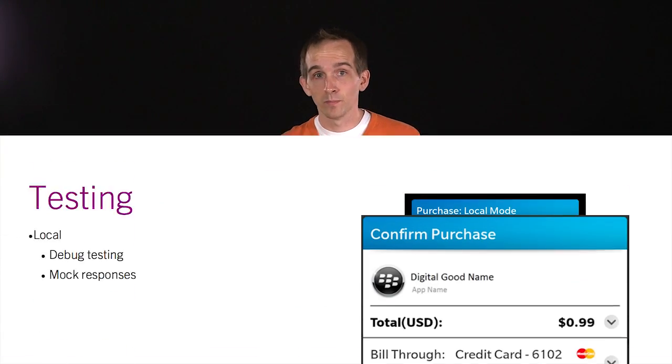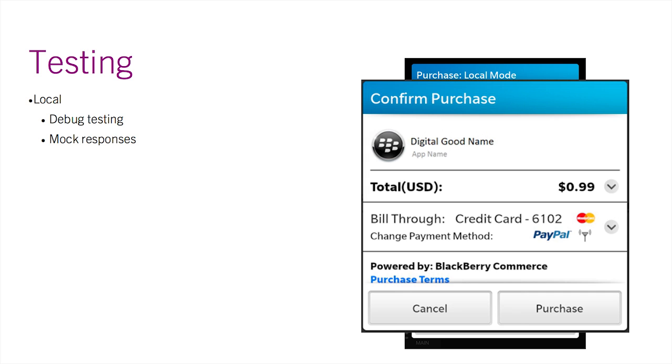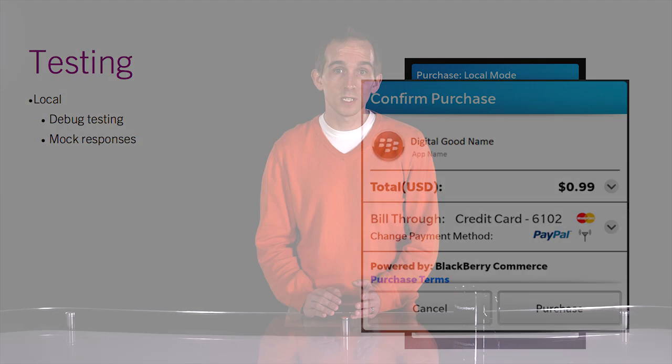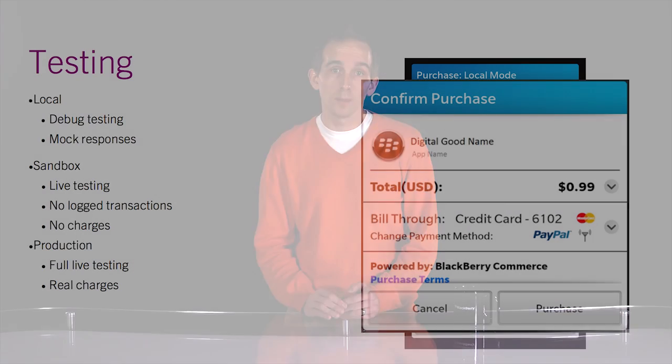Of course, after you've chosen a monetization approach and determined what kind of digital goods you want to sell, the next step is to test out your implementation. Local testing is great for debugging your application before uploading to BlackBerry World. In local mode, you have control over what payment service replies your application receives. This is a great first step to test your app logic and ensure everything is working as expected.